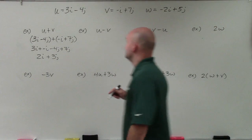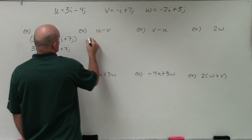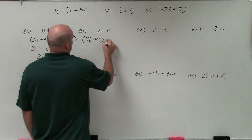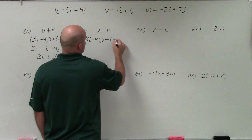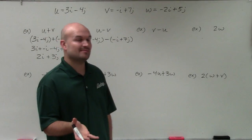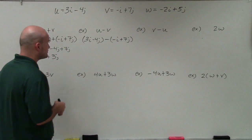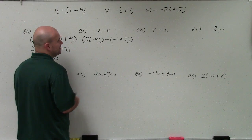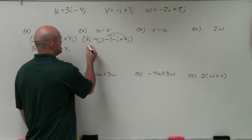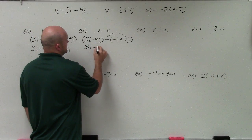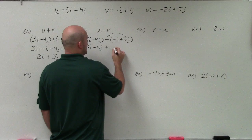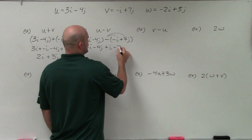Now let's get into u minus v. When doing u minus v, this is where parentheses come really in handy. So I have 3i minus 4j minus v, which is negative i plus 7j. You can apply the distributive property and rewrite it as an addition problem, because any subtraction problem can be rewritten as addition. So I have 3i minus 4j, and minus a negative i becomes plus i, and minus a positive 7j becomes a negative 7j.